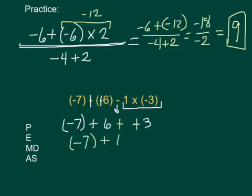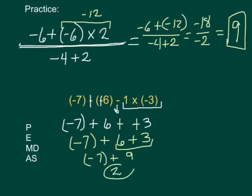So now let's work this problem: negative 7 plus 6 plus 3. You can combine your positives, or you can work it left to right now that you're down to all addition. So let's work this. Negative 7 plus 9 gives you a positive 2.